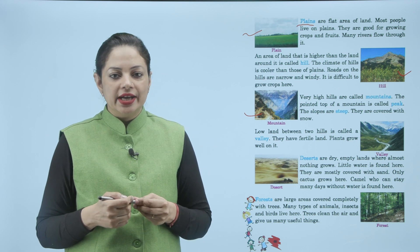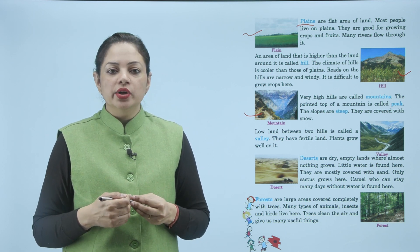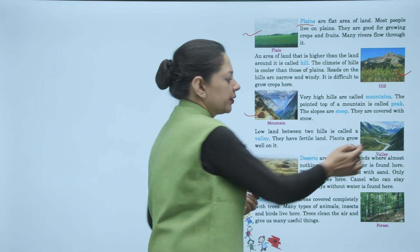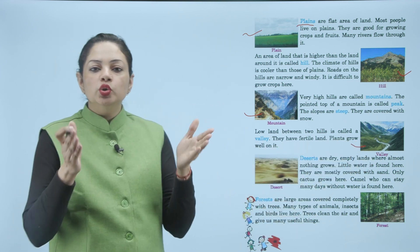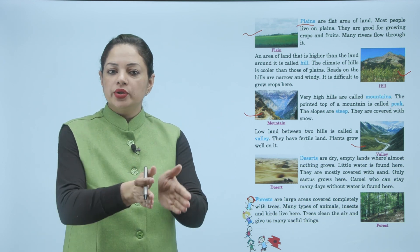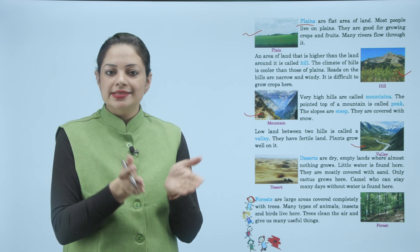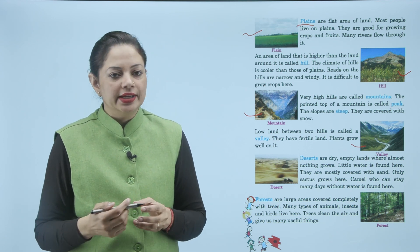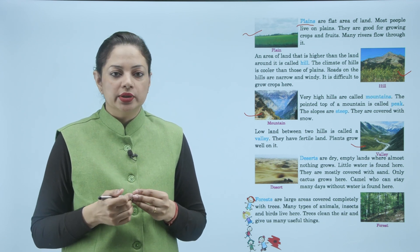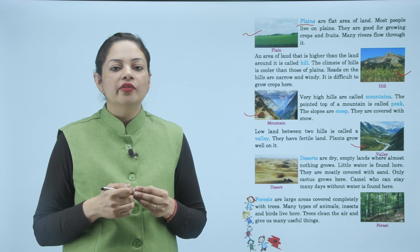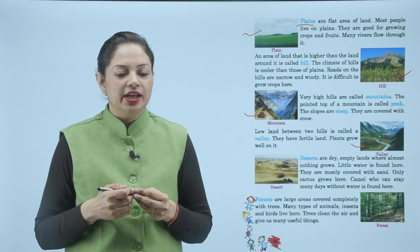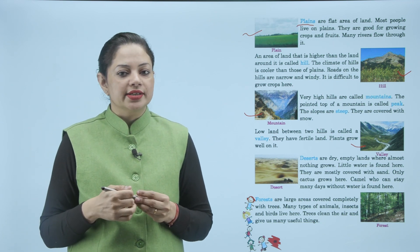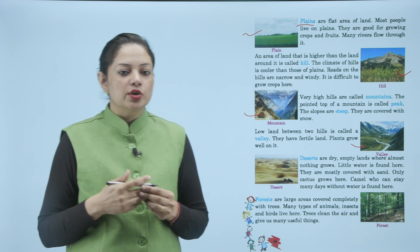Low land between two hills is called a valley. They have fertile land and plants grow well on it. Valley — यानि दो hills के बीच का जो low land होती है उसको valley कहते हैं, जिसको हम घाटी भी बोलते हैं। यहाँ की land बहुत ज़्यादा fertile होती है, यानि बहुत उपजाऊ होती है, और यहाँ पर बहुत अच्छे से plants grow कर सकते हैं।